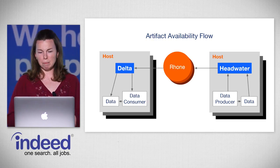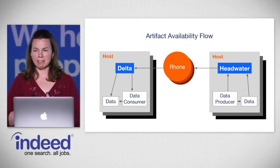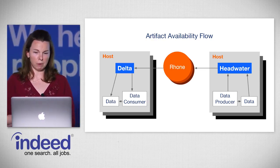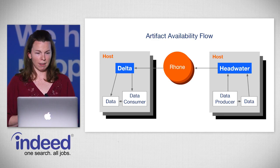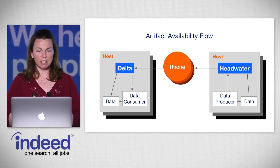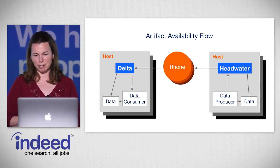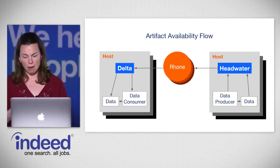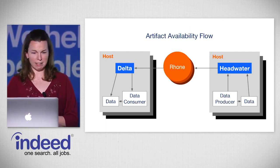With the three services — headwater, Rhone, and delta — RAD can keep multiple ordered versions of artifacts available in the production infrastructure, downloadable to any machine that can communicate with Rhone. All of this happens without any intervention from systems administrators, and the data consumer and data producer remain separate and independent deployables to increase the velocity of development teams.